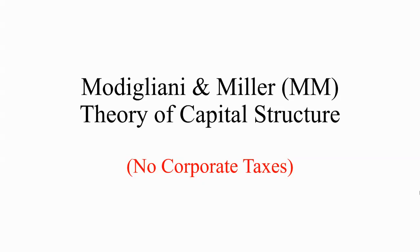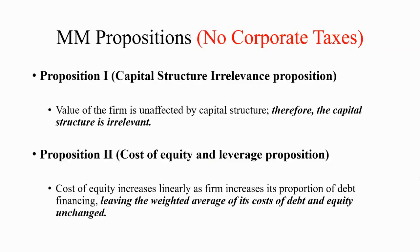In the follow-up video, I will try to explain what happens to MM propositions if we do consider corporate taxes as well as personal taxes. Modigliani and Miller, in their initial paper in 1958, put forward two propositions: Proposition 1, known as the Capital Structure Irrelevance Proposition, which talks about the value of the firm, and Proposition 2, which talks about the cost of capital and is known as the cost of equity and leverage proposition.